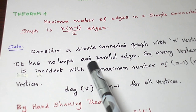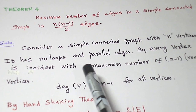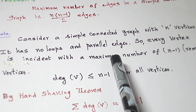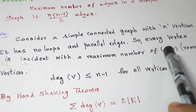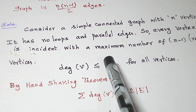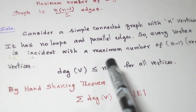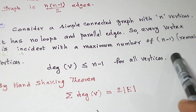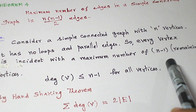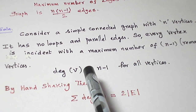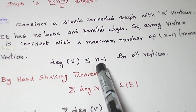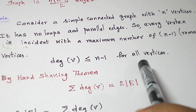Since it is a simple graph, it has no loops and parallel edges. So, every vertex can be incident to the remaining n minus 1 vertices. So, its degree can be a maximum of n minus 1 for any vertex.